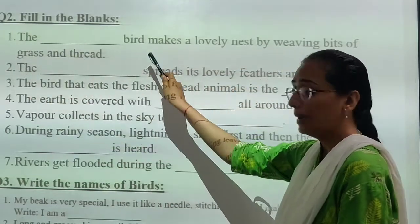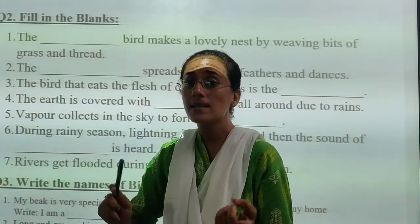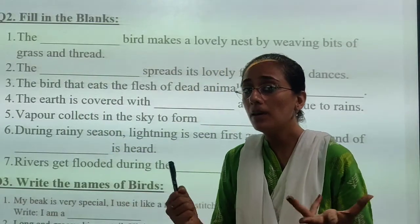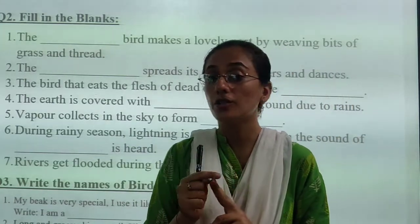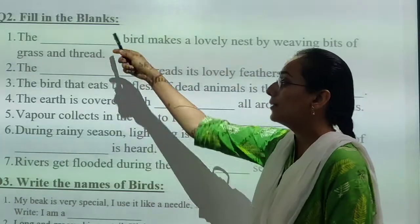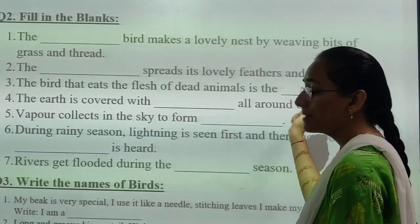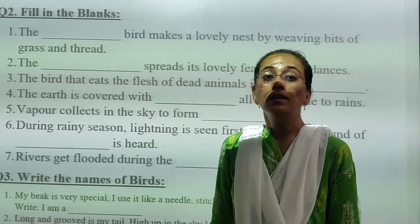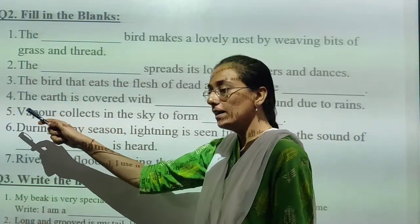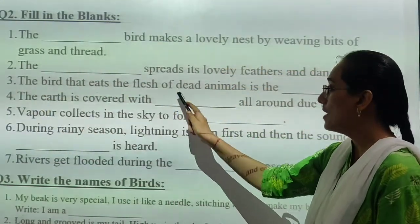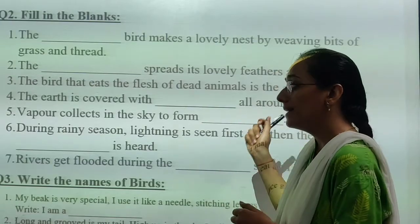Fill in the blanks. First: the dash bird makes a lovely nest by weaving bits of grass and thread. Which bird weaves its nest using grass and small threads? That you have to write. Next: the dash spread its lovely feathers and dances — which bird spreads its feathers and dances? That you have to write. Third: the bird that eats the flesh of dead animals is the dash — which bird eats the flesh of dead animals? That you have to write.